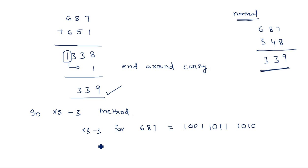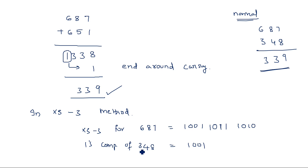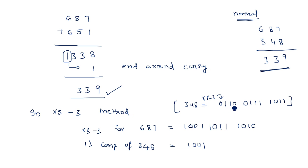1s complement of 348 in XS3: 3 plus 3 is 6, so XS3 of 3 is 0110; 4 plus 3 is 7, XS3 of 4 is 0111; 8 plus 3 is 11, XS3 of 8 is 1011. Taking 1s complement: flip all bits of each group. That gives the 1s complement of the XS3 representation of 348.